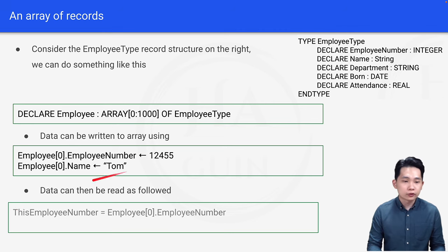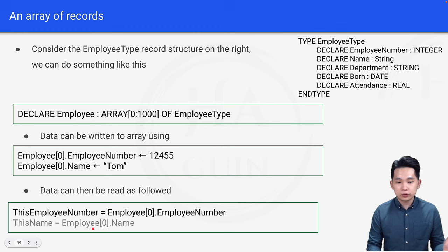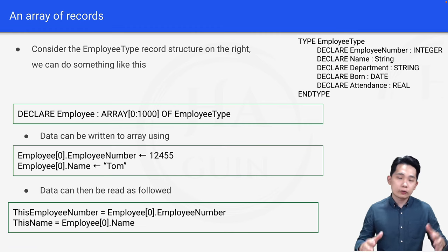And finally, data can be read as follows. This EmployeeNumber equals Employee[0].EmployeeNumber, and next, this Name equals Employee[0].Name. So this is how you can read and write within an array.